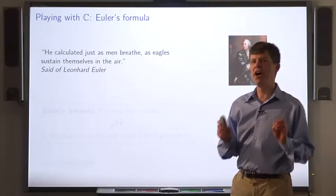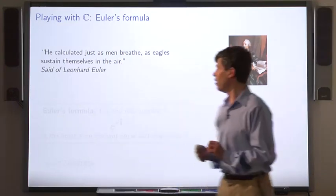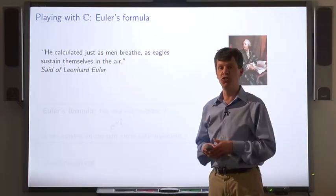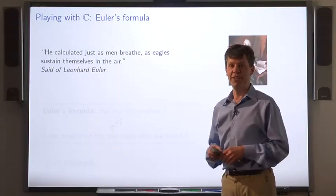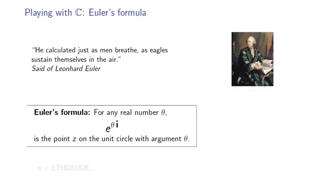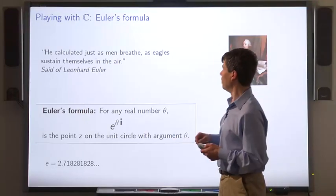To see how to increase the argument of a complex number, we turn to a formula due to Euler, a remarkable mathematician who contributed to many areas of mathematics, not to mention music theory and cartography. Euler's formula states that for any real number theta, e to the theta times i is the point z in the complex plane on the unit circle whose argument is theta. Here, e is the famous transcendental number 2.71828 and so on.